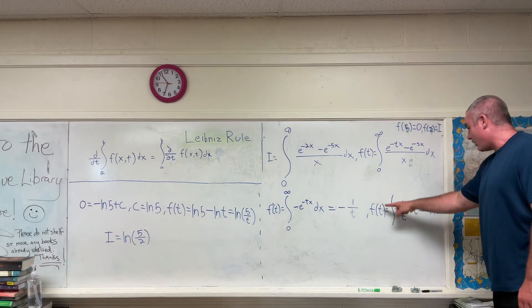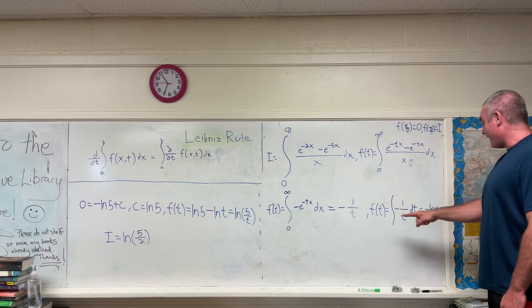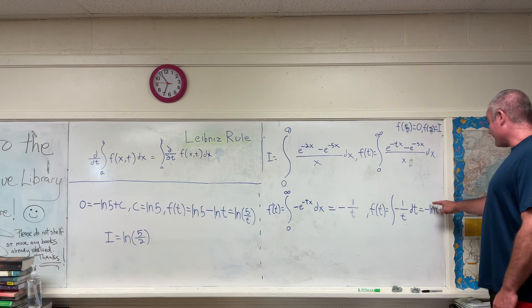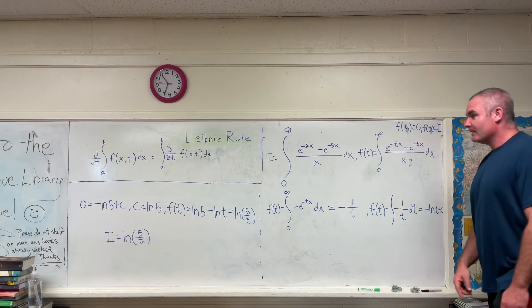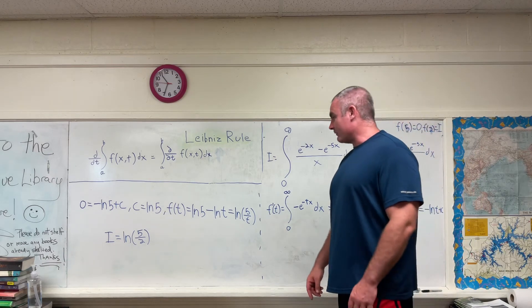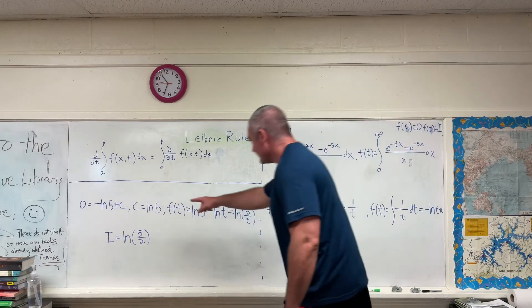We get that because we have that 0 is equal to f evaluated at the point 5. So, right here, f of t is 0 when you evaluate it at 5. So, negative natural log of 5 plus c is equal to 0, giving us a value of natural log 5 for c right there.